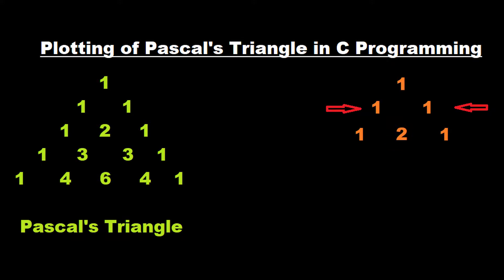Similarly, in the next row we will have 1, and then 1 and 2 will be added and we have 3, and then again 2 and 1 will be added, we have 3, and then finally we have 1 and 1. So the triangle goes on like this — depending on the number of rows you have, the value will be added on and it will keep on continuing.